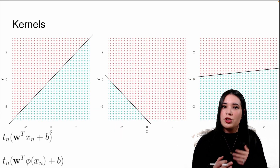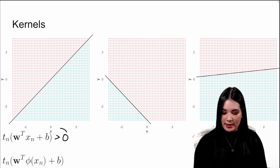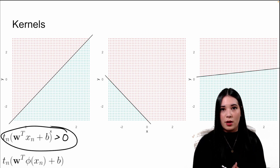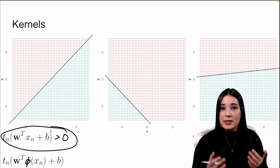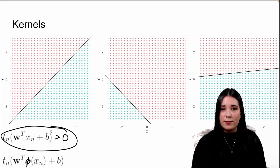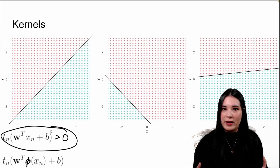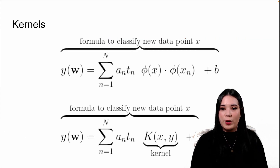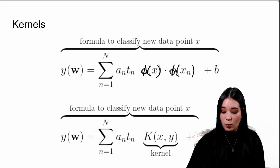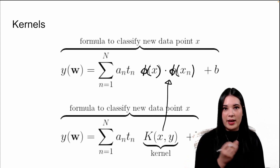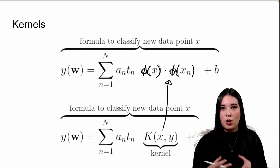All we have to do for a support vector machine is change a little bit of the notation. Previously, this constraint told us that all of our data points have to be above or below the plane. Now we're rewriting it and all we're really adding is this little phi function. This essentially says that we're creating a support vector classifier after transforming our data x using the function phi, which usually projects our data into multiple dimensions. Similarly, in order to classify a new data point, we can use the same formula as before, except now instead of just our x's, we have our phi of x for both the data points.